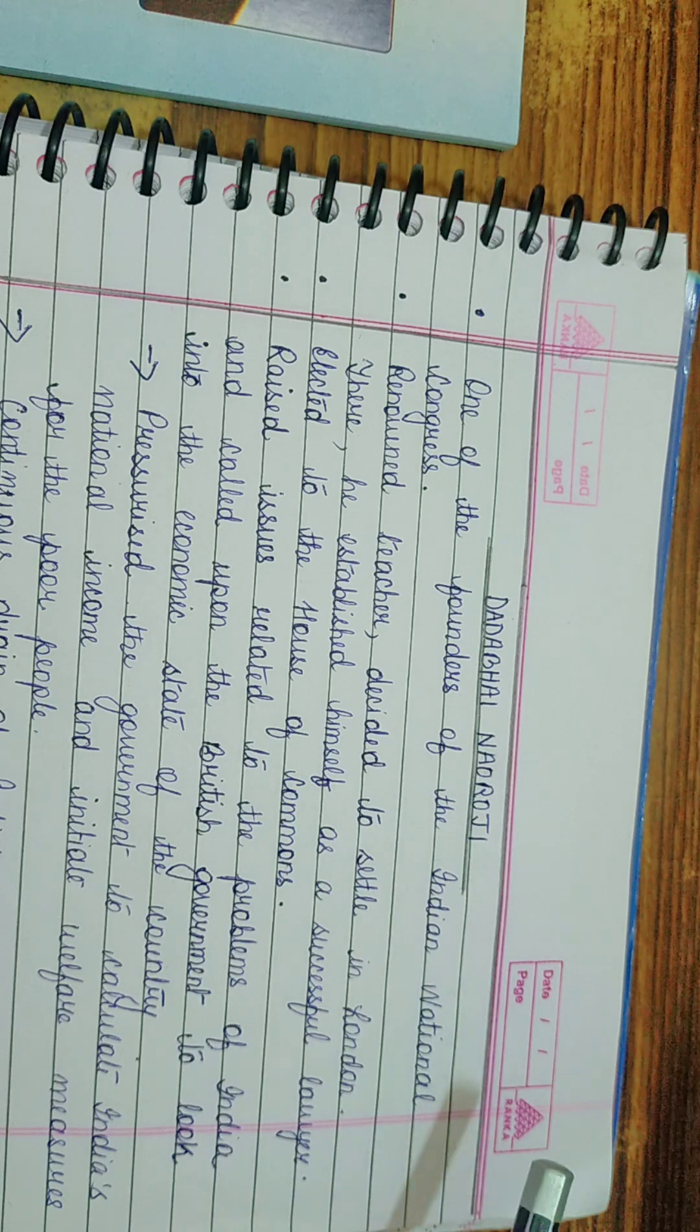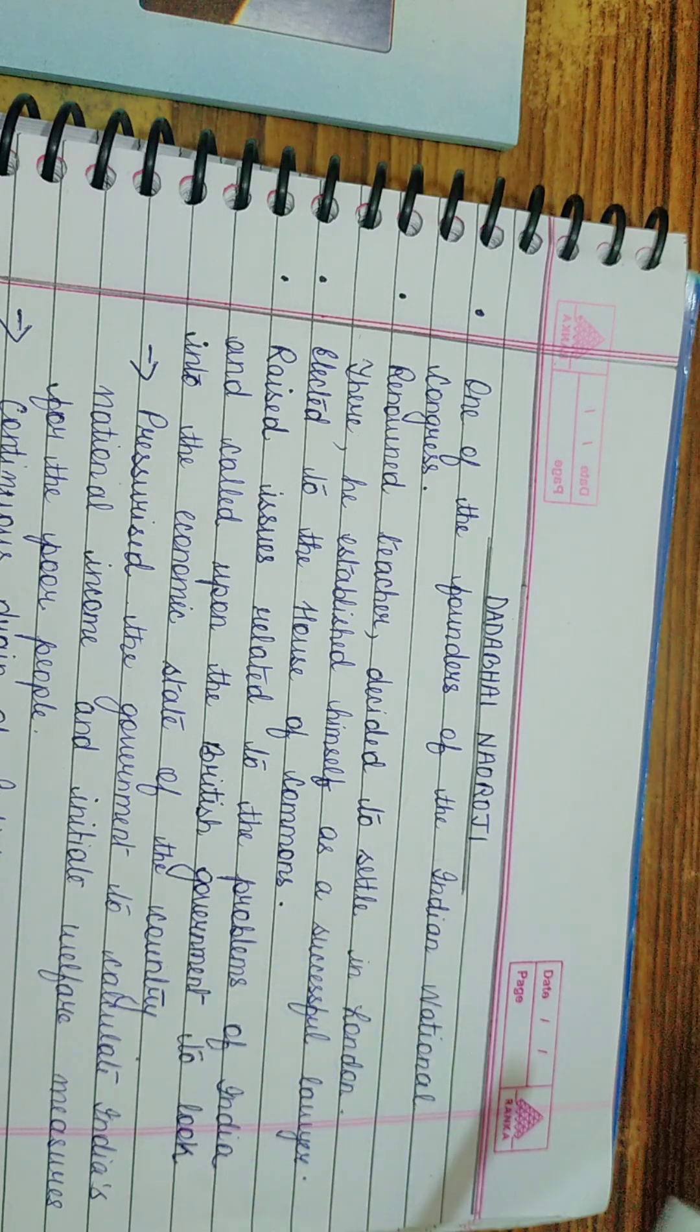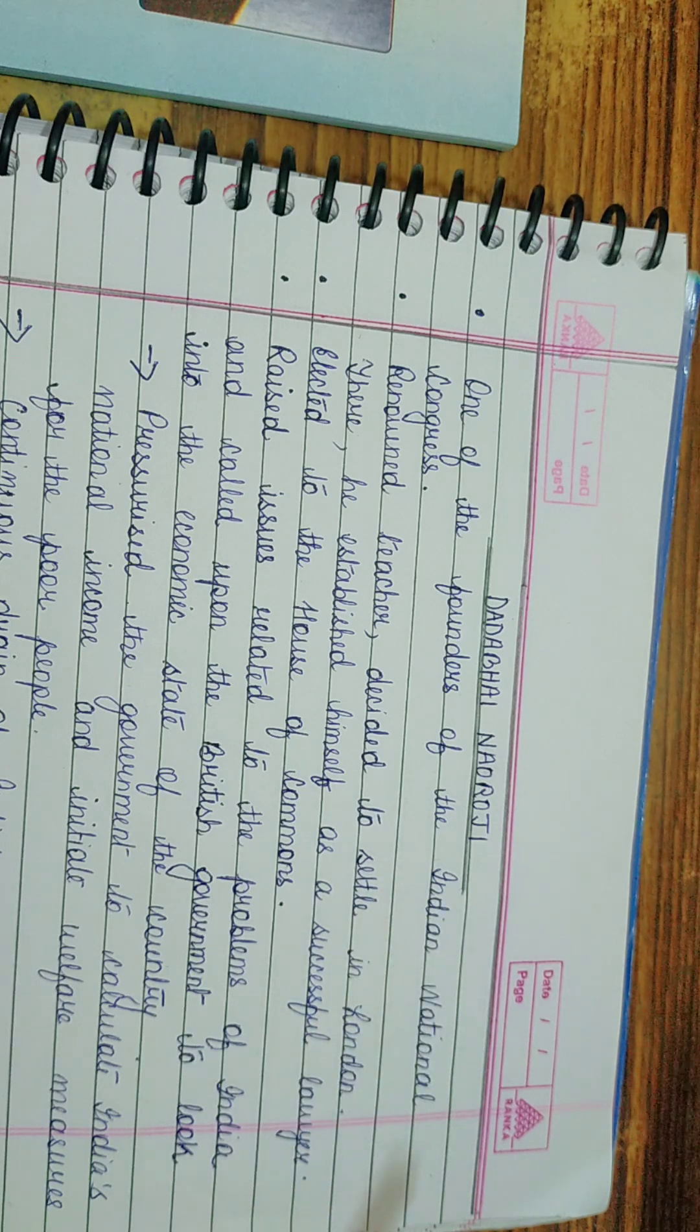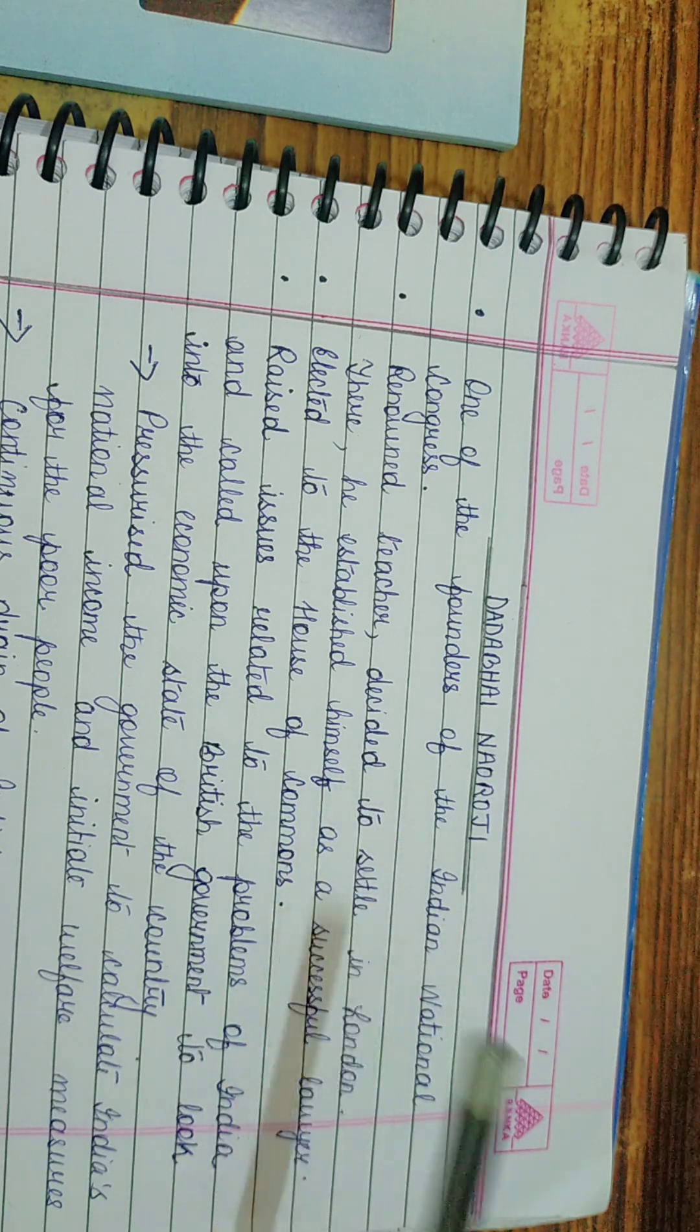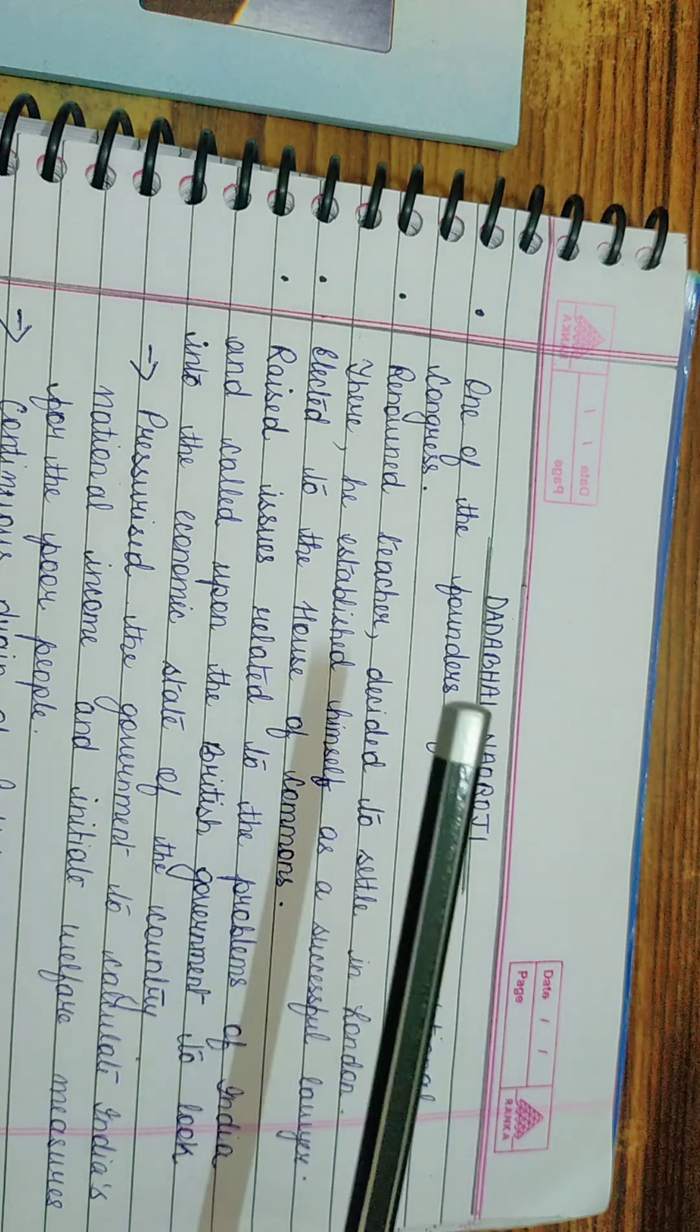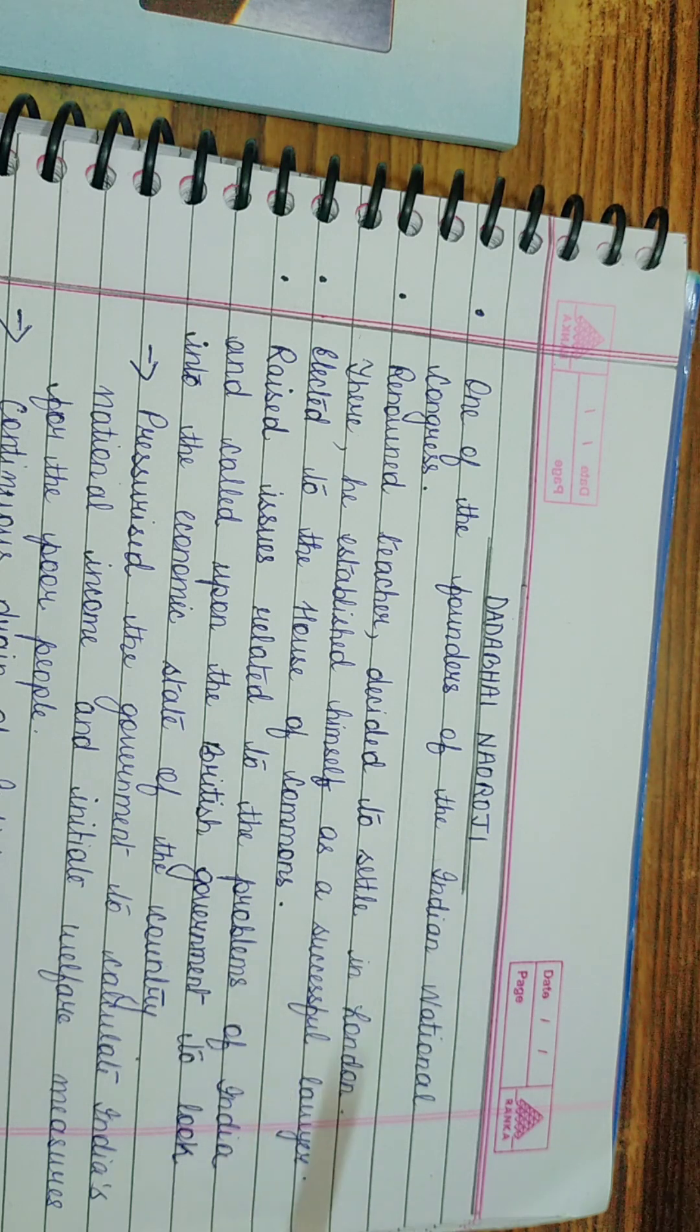One of the founders of the Indian National Congress, Dadabhai Naoroji was a renowned teacher but he decided to settle in London, and there he established himself as a successful lawyer. Later, he was elected to the House of Commons, Britain's parliament. He raised a lot of issues basically related to the problems of India.